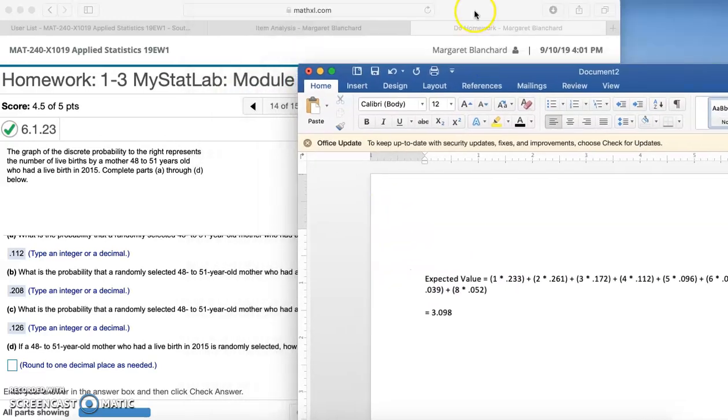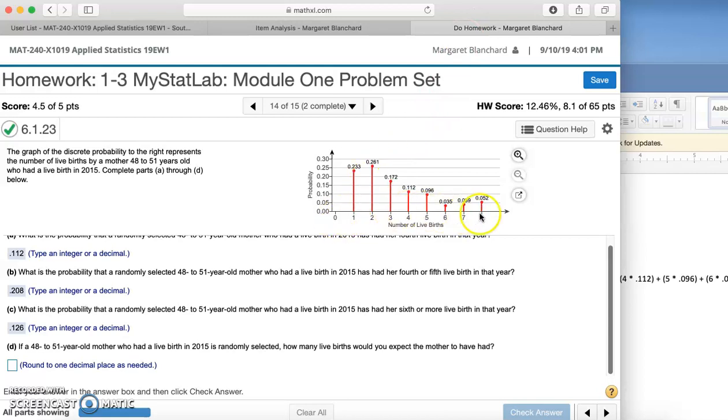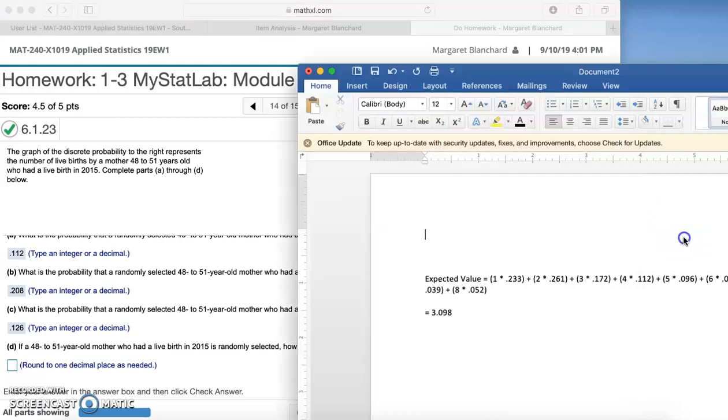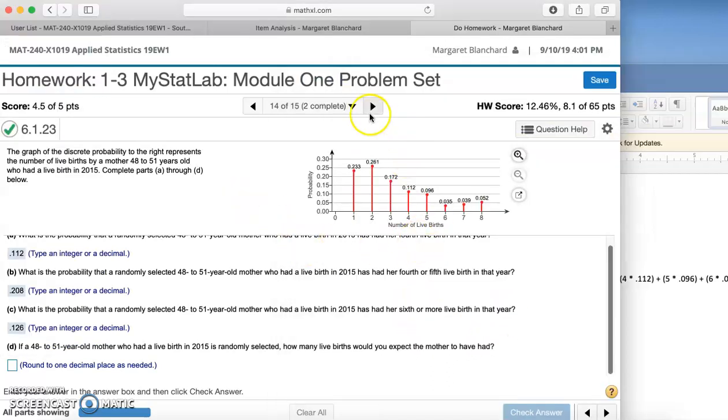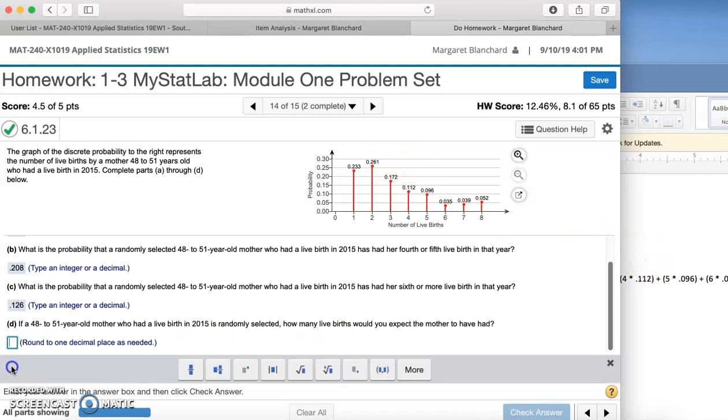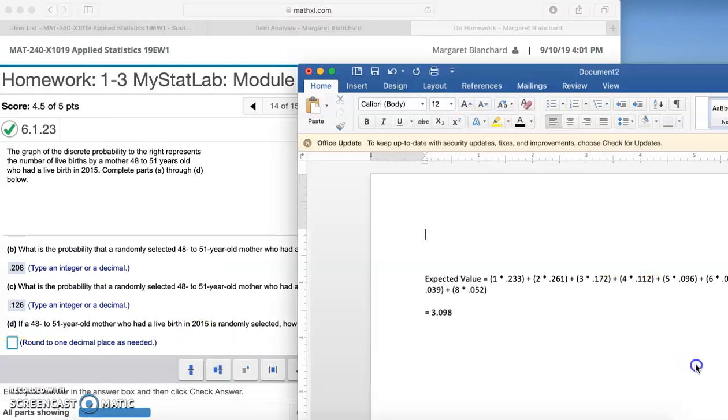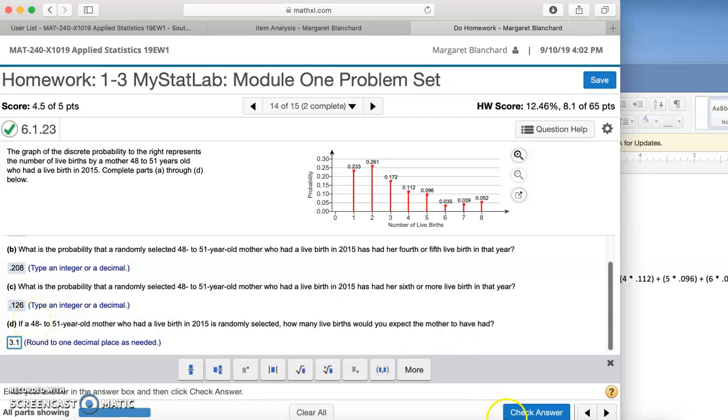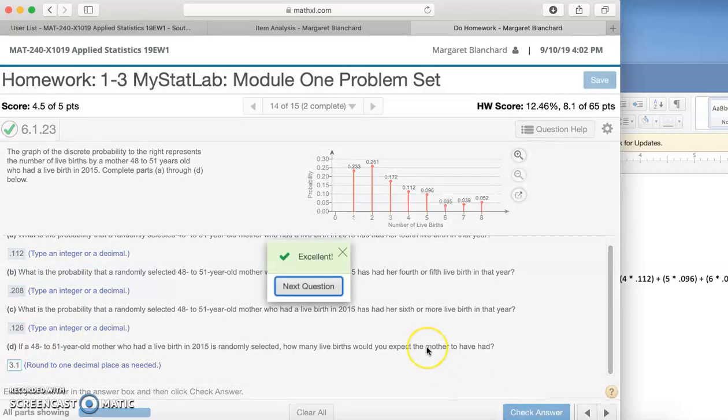Let's think about this from a logical perspective. We have zero to eight as possible values, but the bulk of them are down here in one, two, three, four. So having an expected value of 3.098 is in line with seeing that most of the data is down here. This asks us to round to one decimal place, so we would round that to 3.1. Excellent. That's problem number 14 from module one.